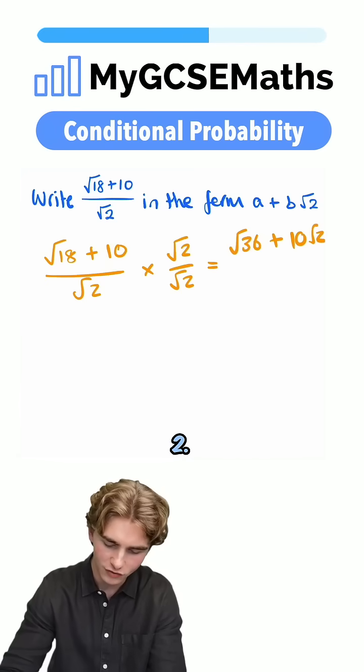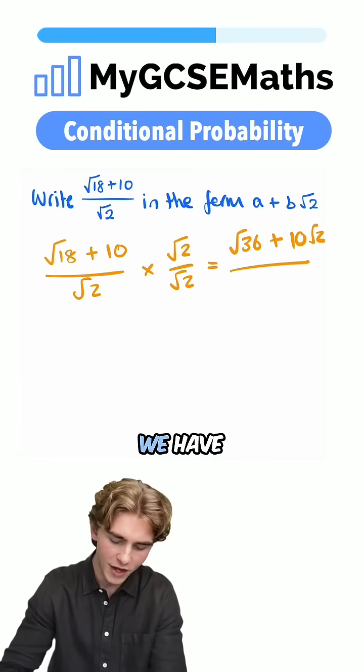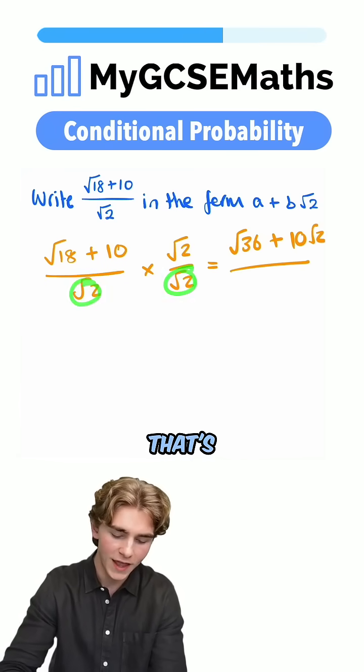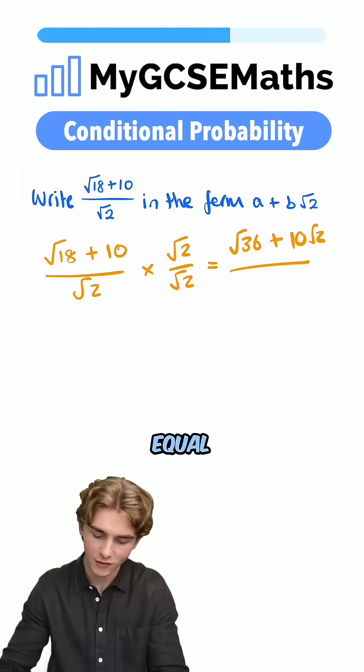And then on the bottom, what do we have? We have root 2 times by root 2, that's going to be root 4, which is just equal to 2.